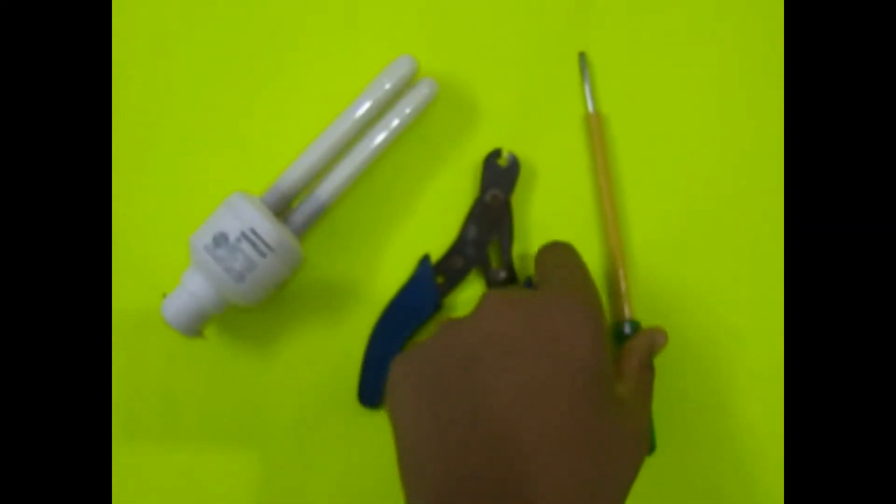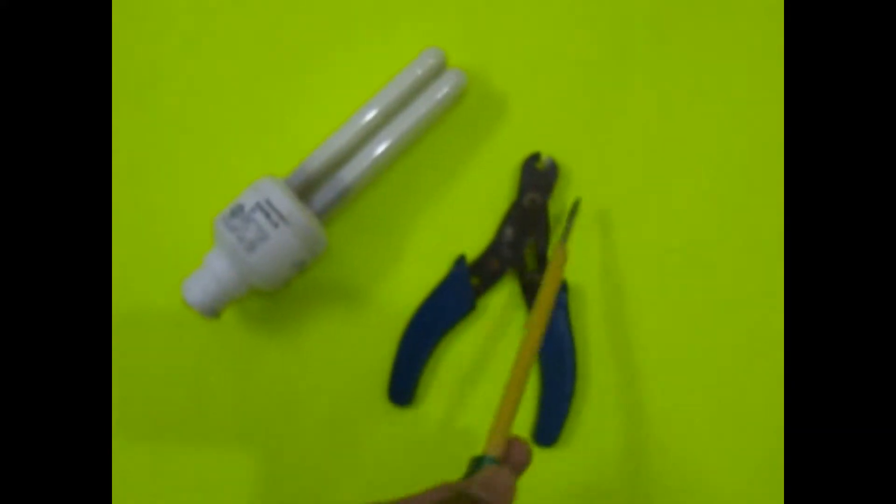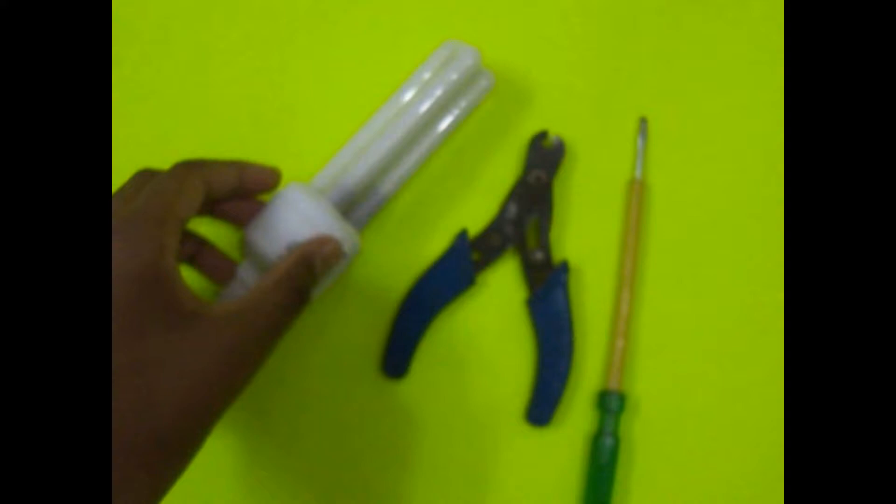For opening the CFL we need a screwdriver, a pair of pliers (optional), and for cutting wires inside the CFL we need a pair of wire cutters.